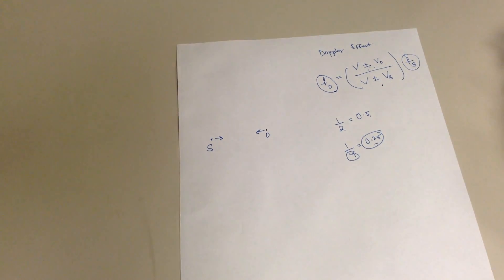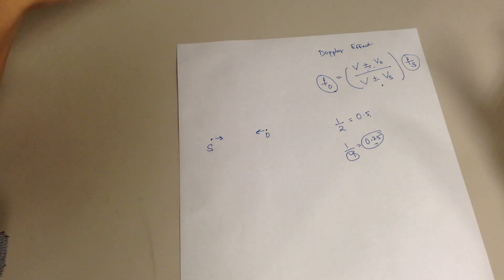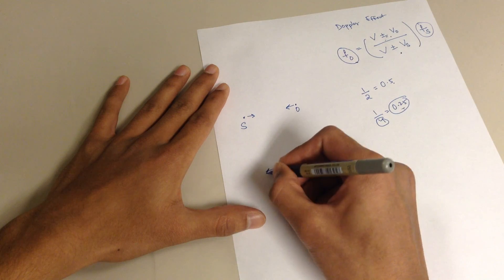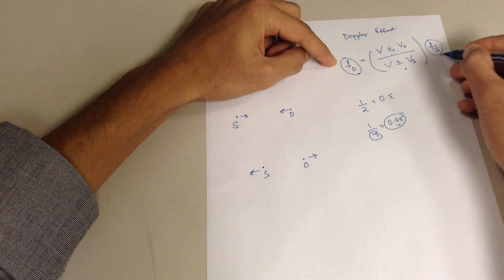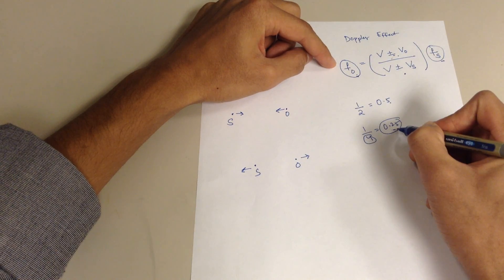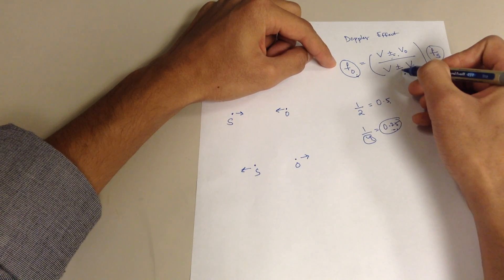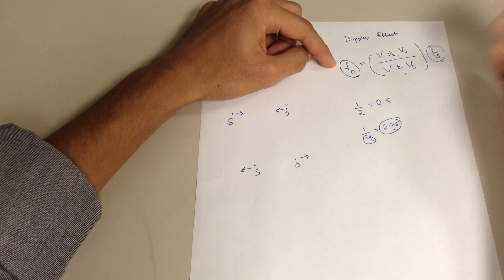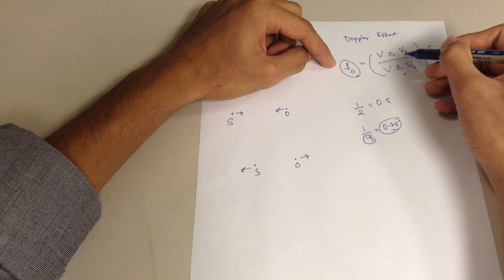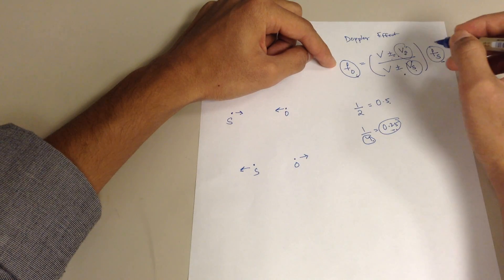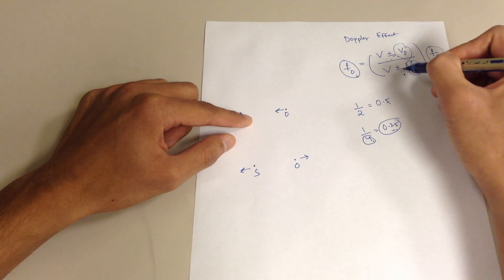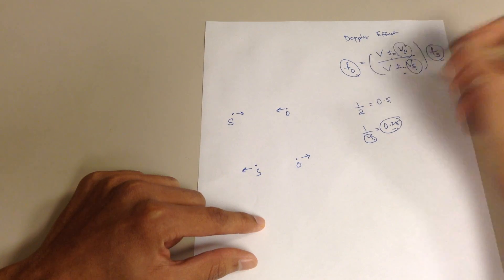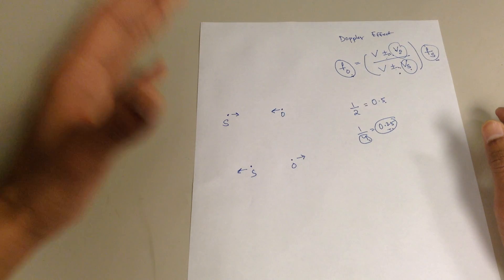All you have to determine is whether the source and the observer are coming closer to each other or going away from each other. If they're going away — the source going one way and the observer going the other — the observed frequency is going to be smaller than the actual frequency. To make the fraction smaller, you make the bottom big: so you add the denominator and subtract the numerator. If either the observer or the source is stationary, their velocity is simply zero. To summarize: if they're coming closer, add the numerator and subtract the denominator; if they're going away, subtract the numerator and add the denominator.